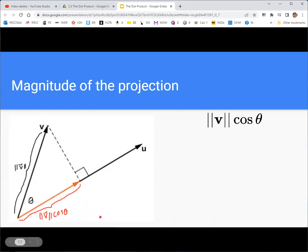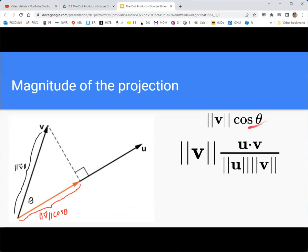So magnitude of v times cosine of theta is the magnitude of this projection vector, but we don't really want theta in our formula. So we're going to use the formula from before that relates the cosine to the dot product. Remember, cosine of theta is u dot v over magnitude of u times magnitude of v. So we just saw that earlier in this presentation.